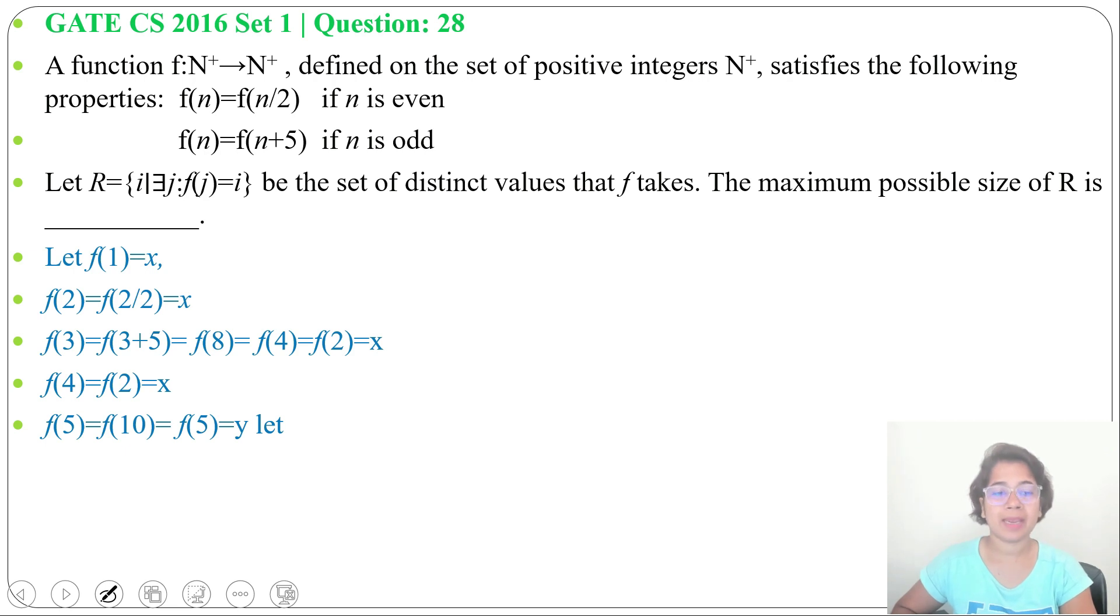Now f(6). f(6) will be f(3), and f(3) equals x. Now f(7). 7 is an odd number, it will be 7+5.